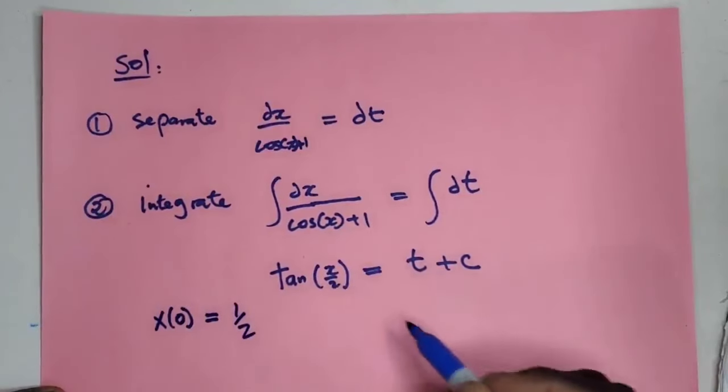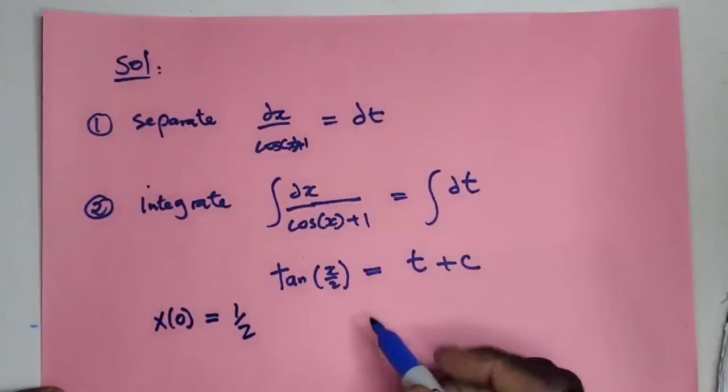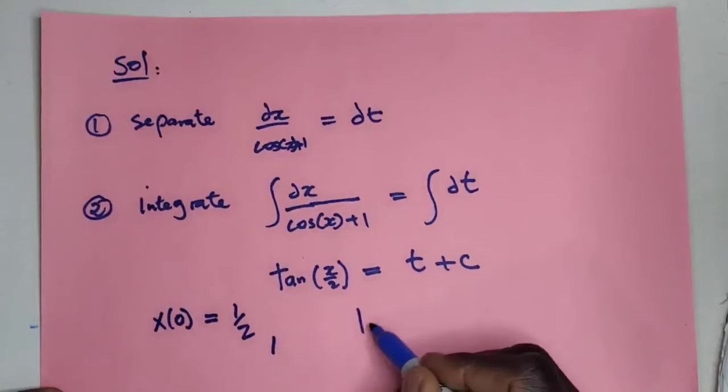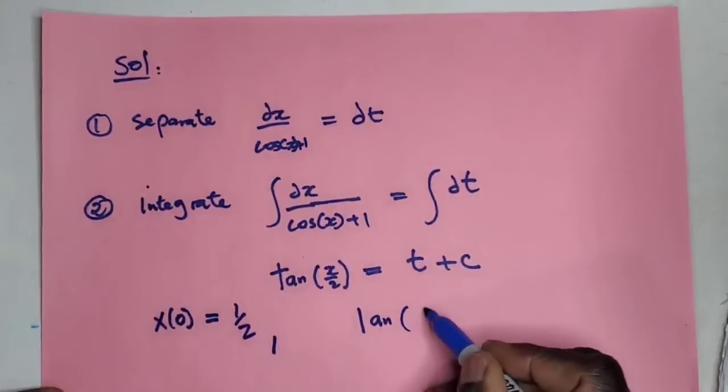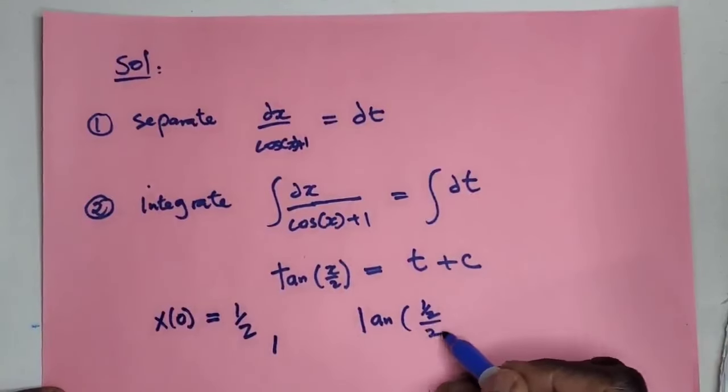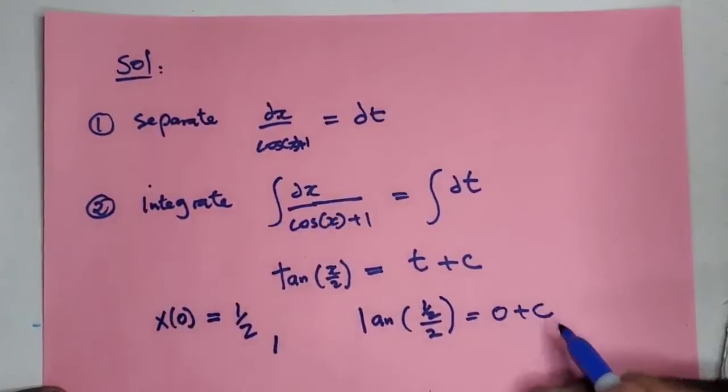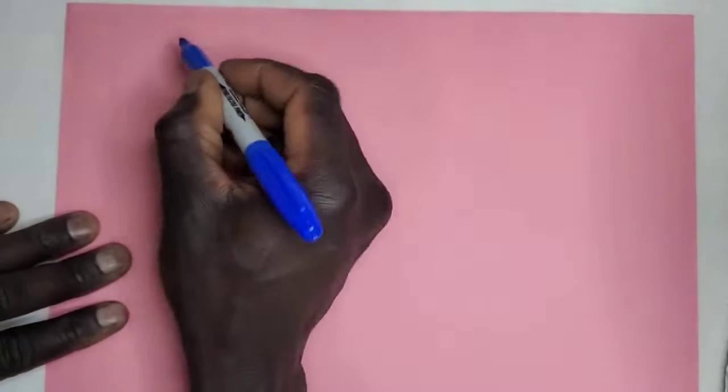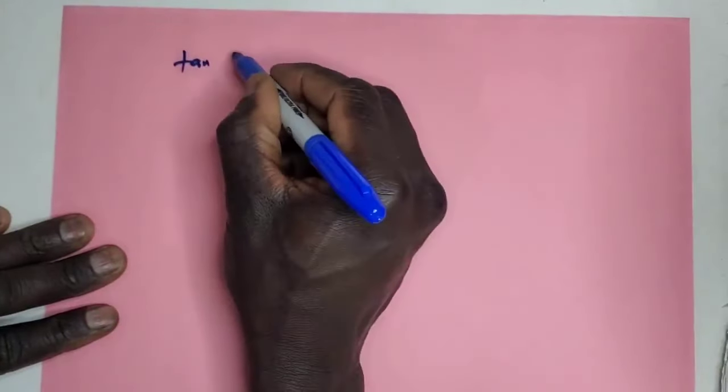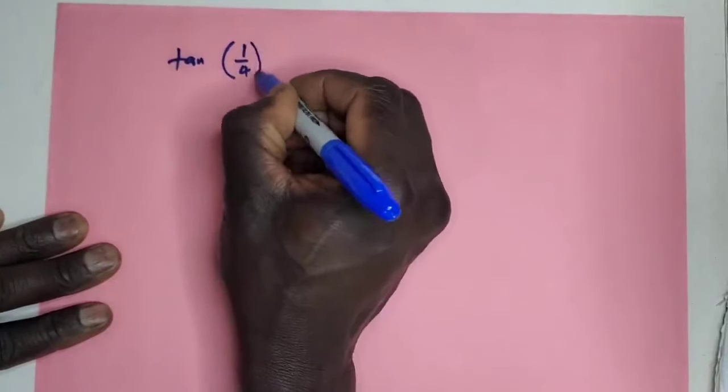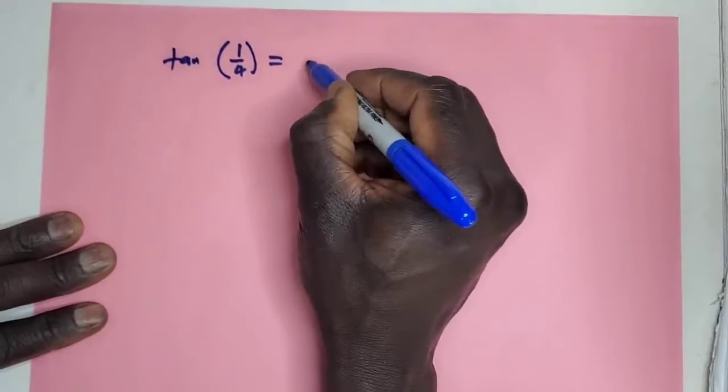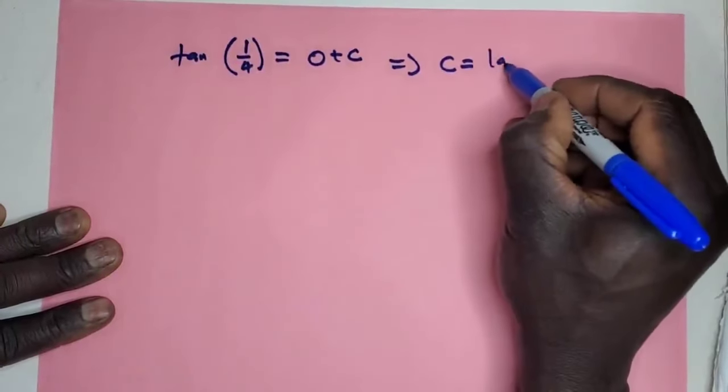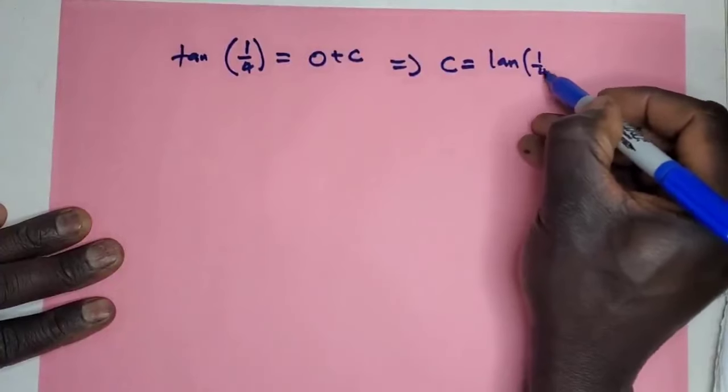So that is tan of half of x/2 is equal to 0 plus c. Now tan of quarter is equal to 0 plus c, which implies c is equal to tan(1/4).